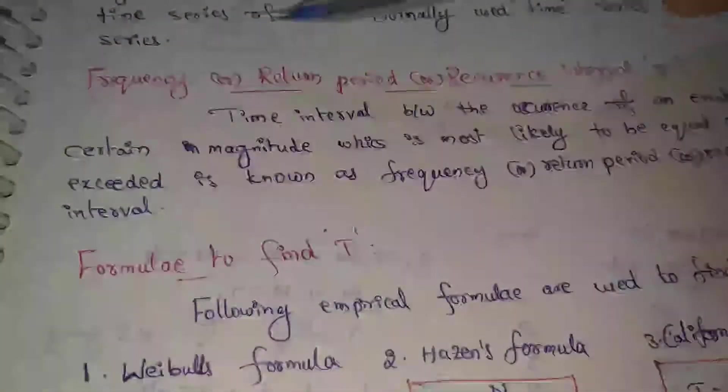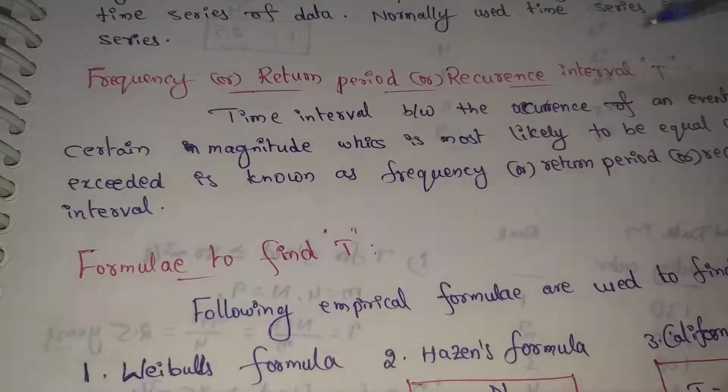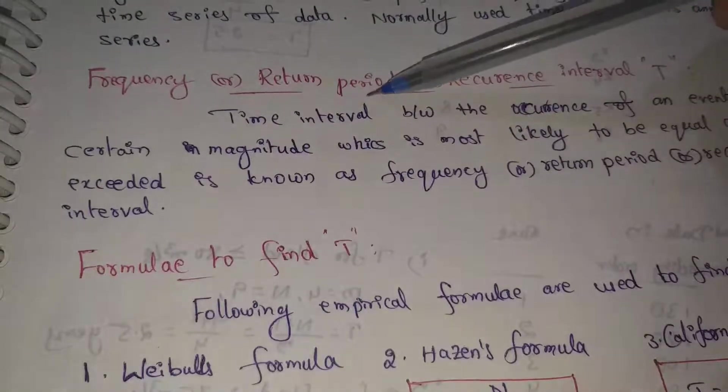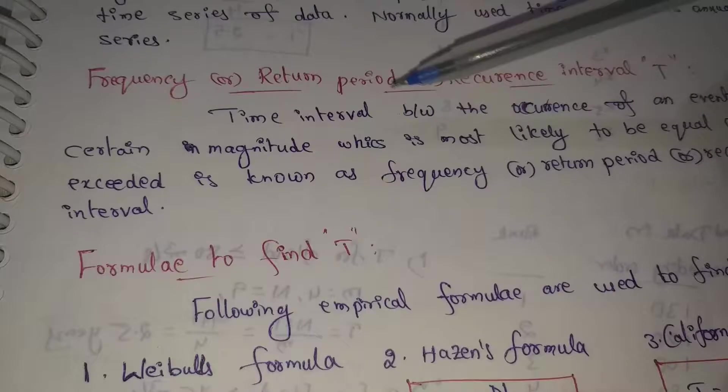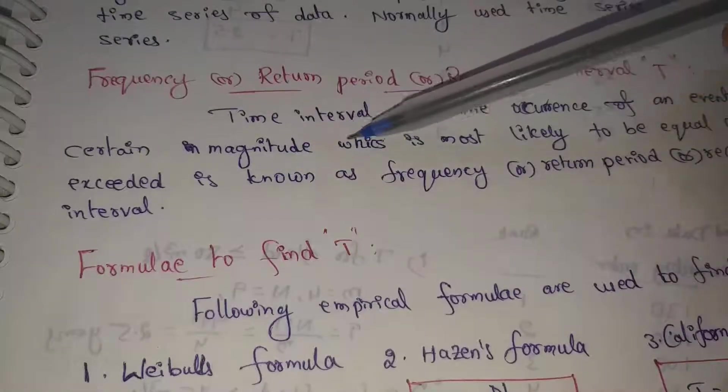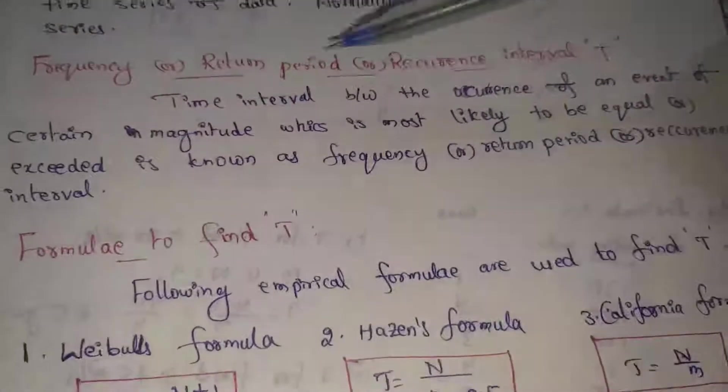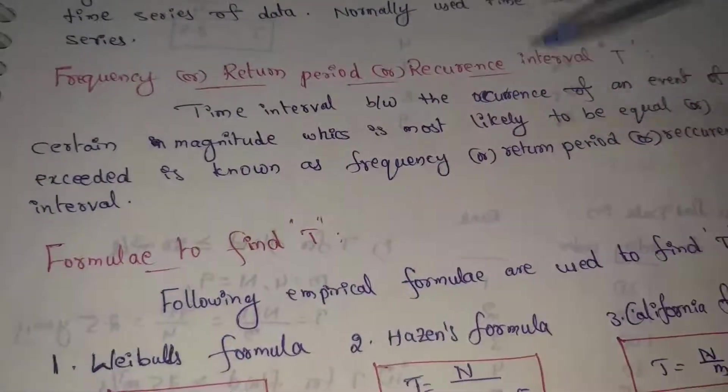Next topic is frequency. Frequency is also known by different names: return period and recurrence interval. Frequency is the time interval between the occurrence of an event of certain magnitude which is most likely to be equal or exceed.